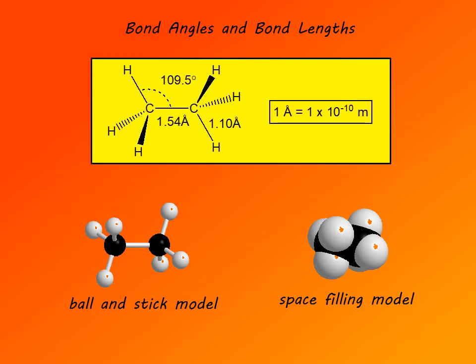Bond angles and bond lengths in ethane are ideal tetrahedral. Bond angles are 109.5° and the carbon–carbon single bond length is 1.54 angstroms. You should remember this bond length because it is the typical bond length of a carbon–carbon single bond.